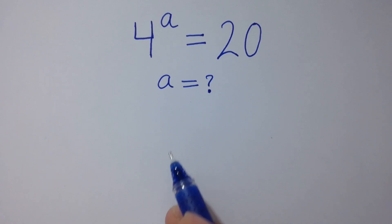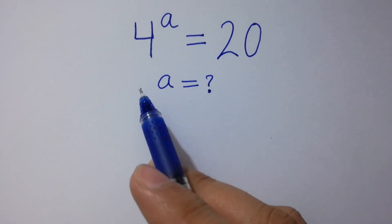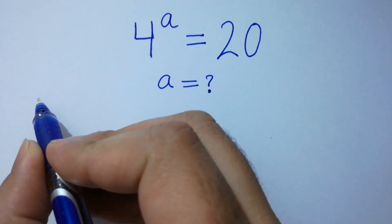Hello friends, find the value of a if 4 to the power a equals 20. Let's have a solution.